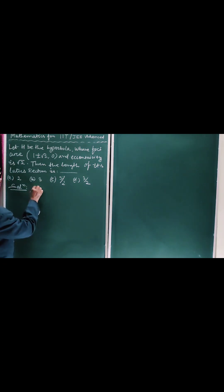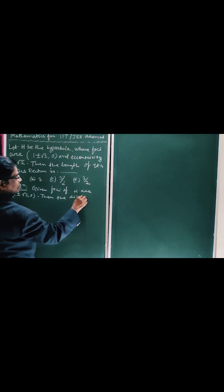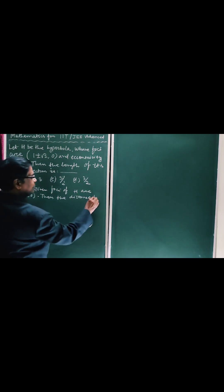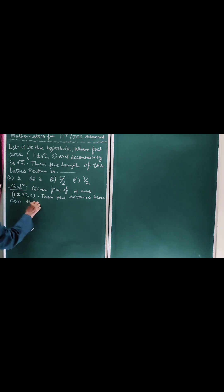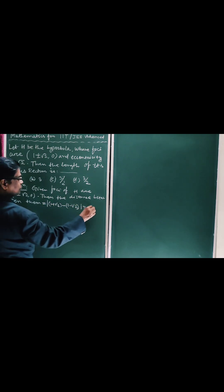Given foci of H are (1 ± √2, 0). Then the distance between them is equal to |(1 + √2) - (1 - √2)|, which is equal to 2√2.